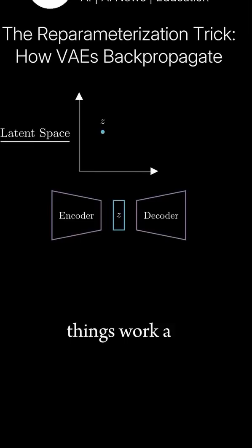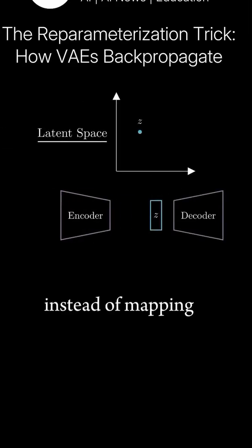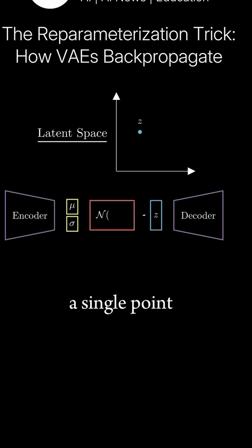Now, with variational autoencoders, things work a bit differently. Instead of mapping the input to a single point, the encoder converts the input into a probability distribution that we chose to be a Gaussian.